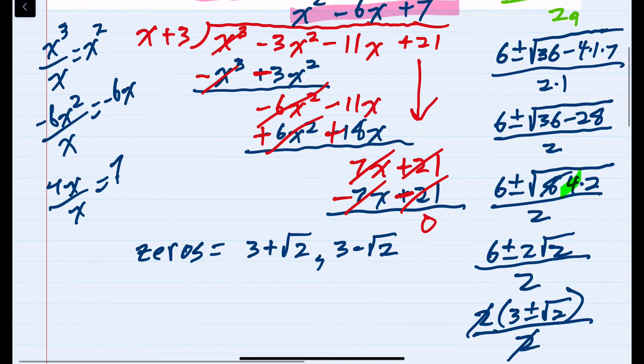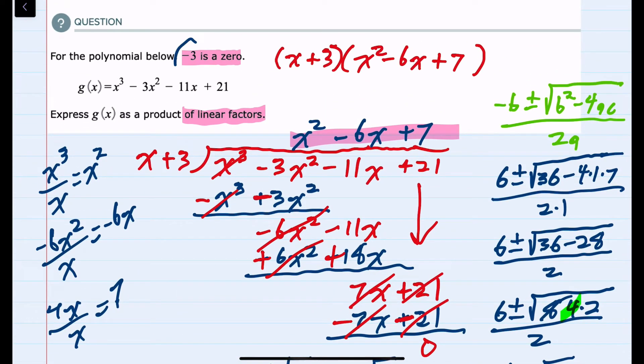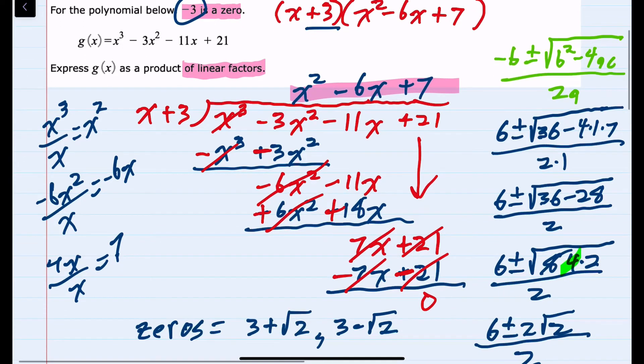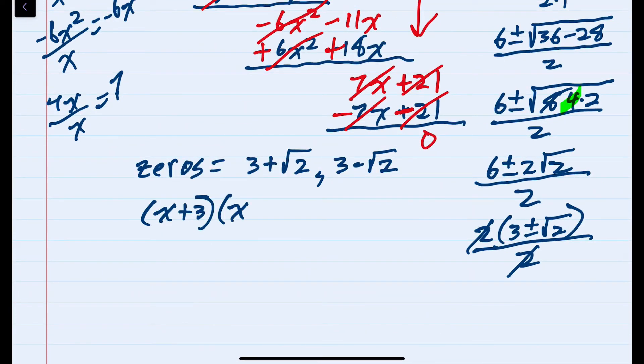And just as before when we were given the original zero here of minus 3, the opposite of each one of those zeros is going to be what forms our factors. So we've got the original x plus 3, and then we would have x minus the first one, so x minus a 3 plus the square root of 2, and then an x minus the second one, which is 3 minus the square root of 2.